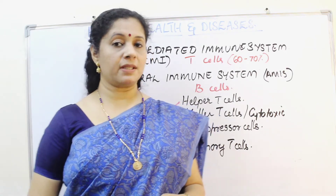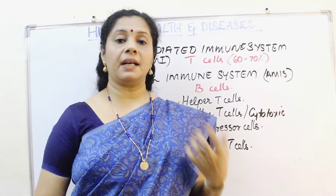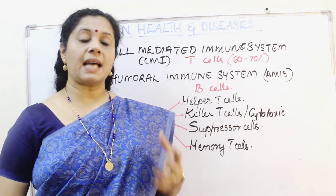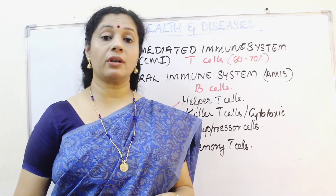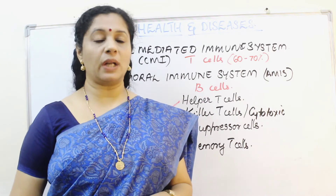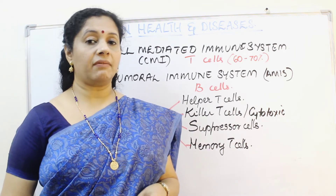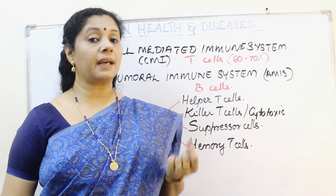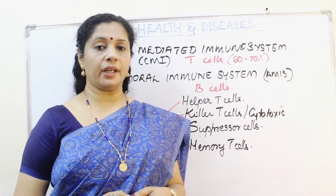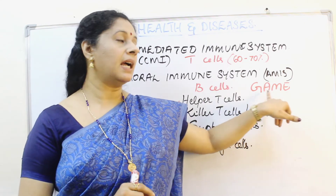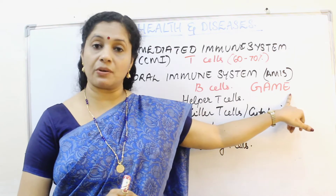Ten to twenty percent of our immune system works based on the humoral immune system, also called antibody-mediated immune system — antibodies produced by B lymphocytes. These antibodies are immunoglobulins with four polypeptide chains: two heavy chains and two light chains, called the H2L2 structure, connected by disulfide linkage. They have a site where the antigen can bind and be destroyed. The major types of antibodies are IgG, IgA, IgM, and IgE.